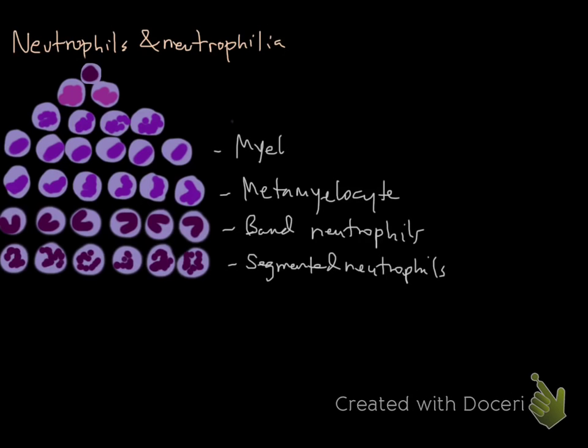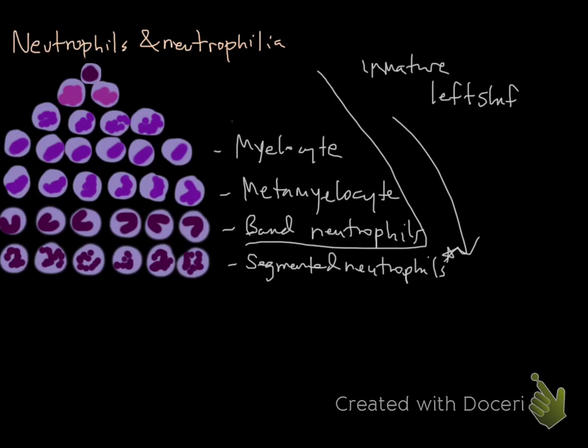We rarely see what's called the myelocyte. And again, this is immature up here. And then maturity goes this way. So segmented neutrophils are who we expect to see, but if you see anything before that, then that is immature cells that are being released. And that is called a left shift. And that's due to inflammation almost always.